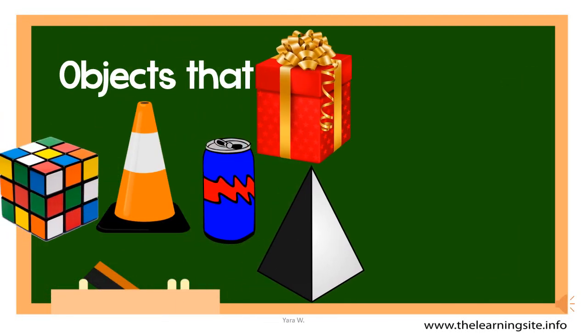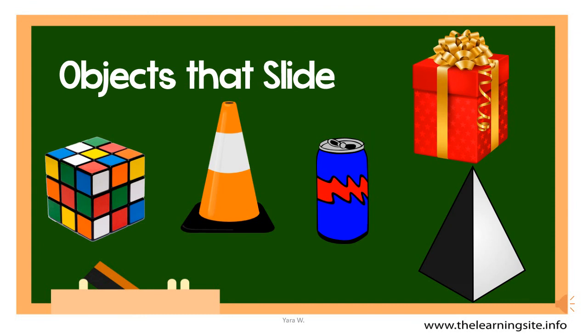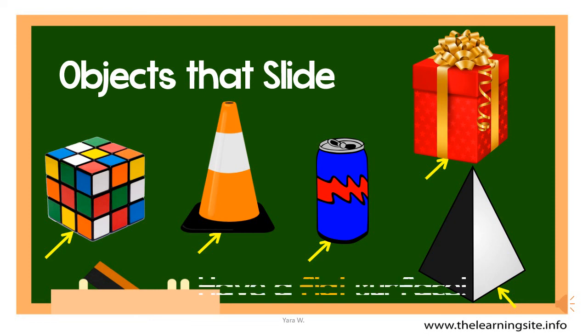Look at those objects that slide. As we said, the only surface that will touch the ground is the bottom surface. Look at all of these objects — do you notice a common thing about the bottom surface? All those objects have a flat bottom surface. So to slide, the object needs to have at least one flat surface. Now, all flat surfaces can slide.